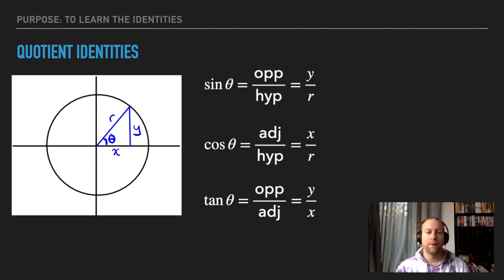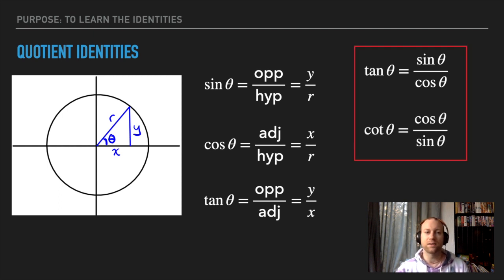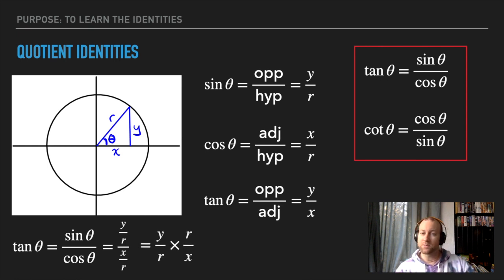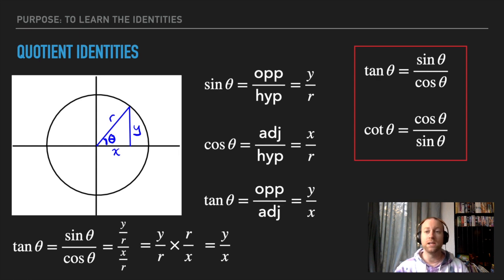We have similar equations for cosine and tangent — this is review from before. This gives us the quotient identities: tan theta equals sine over cosine, cotangent — you've seen these before. But let me show you this works for any situation, not just the unit circle. If we plug in sine theta equals y over r and cosine theta equals x over r, and divide by fractions — that's the same as multiplying by the reciprocal — the r's cancel. So these equations work for any circle, not just the unit circle.